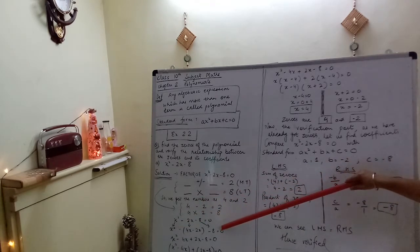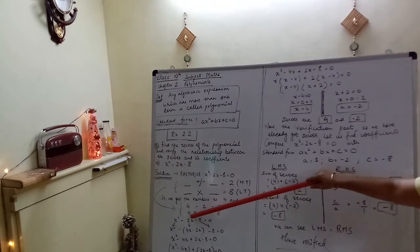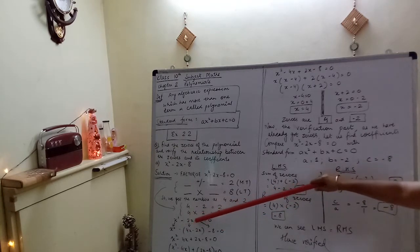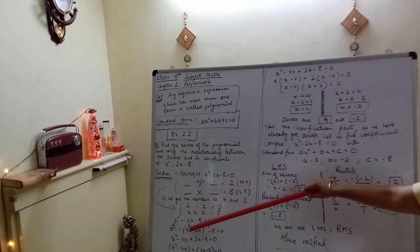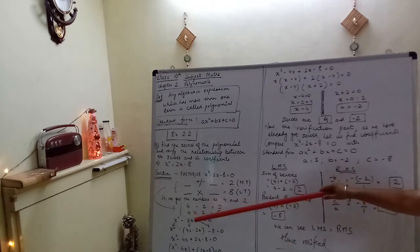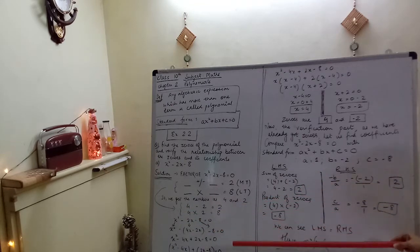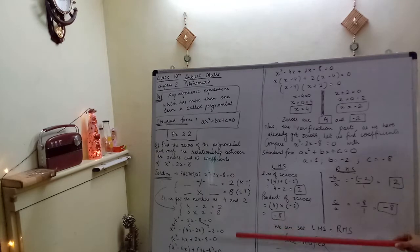Last term ko as it is copy karna hai with the proper sign, but this middle term ko break karna hai, 2 ki jagah 4 minus 2. This is why this method is called splitting the middle term, so we split it as 4x minus 2x. Now we have to open the bracket, and remember whenever we open the bracket, if there is negative sign outside...